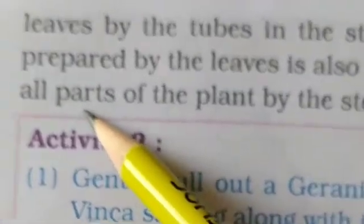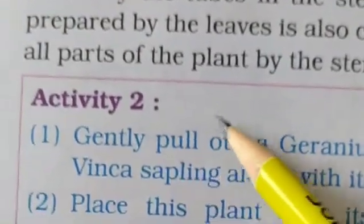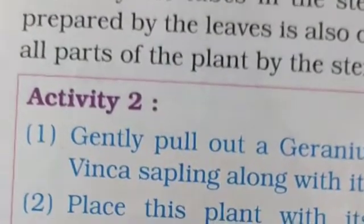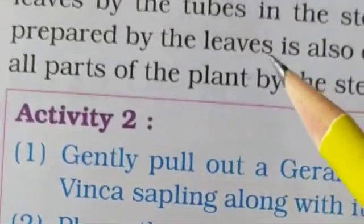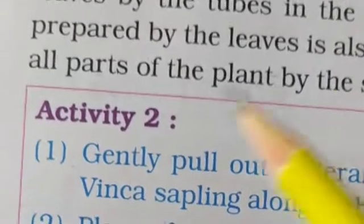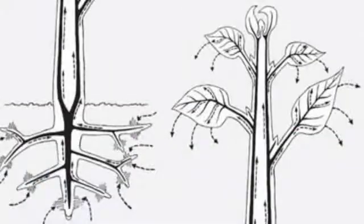Food prepared by the leaves is also carried to all parts of the plant by the stem. जो food है वो कौन prepare करता है? Yes, leaves prepare करती है. और जो tubes होते हैं वो carry करते हैं — leaves का food all parts of the plant में. Stem के through जितने भी water and minerals हैं वो all parts में supply करते हैं — supplier is stem. उसमें छोटे-छोटे tubes होते हैं, वो हमने last session में किया था, the root में.